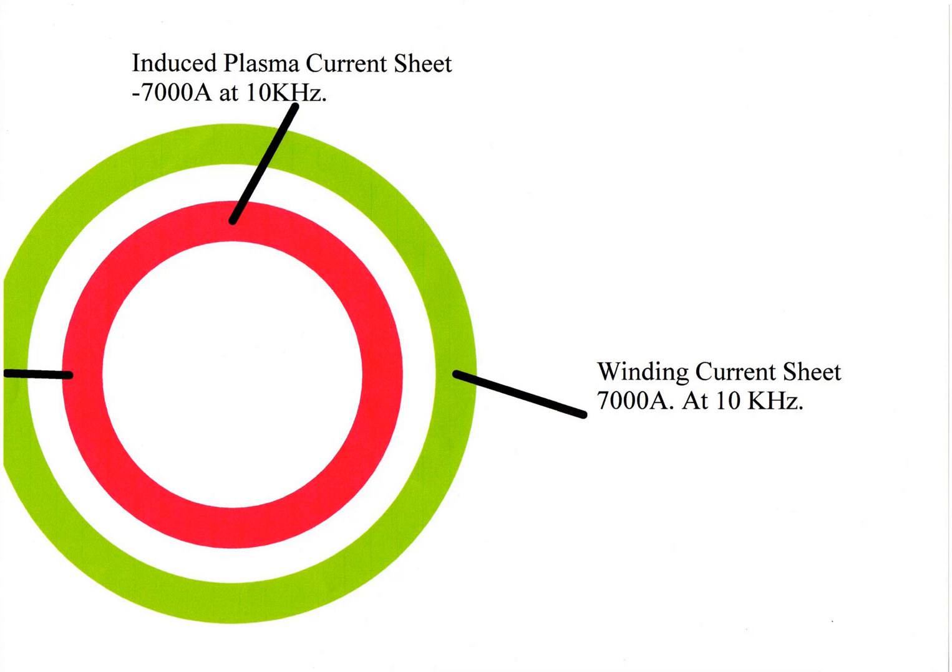This is the second stage. The green is the winding and the red is the plasma.